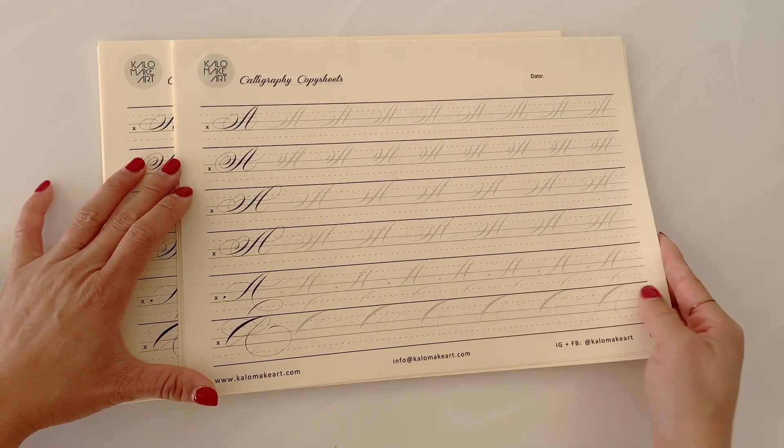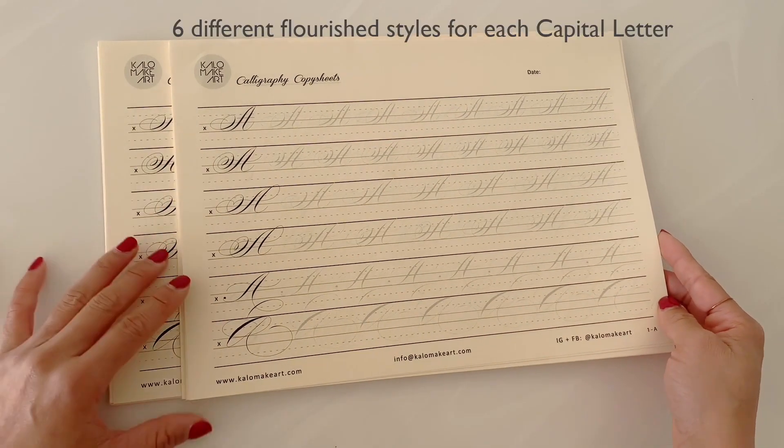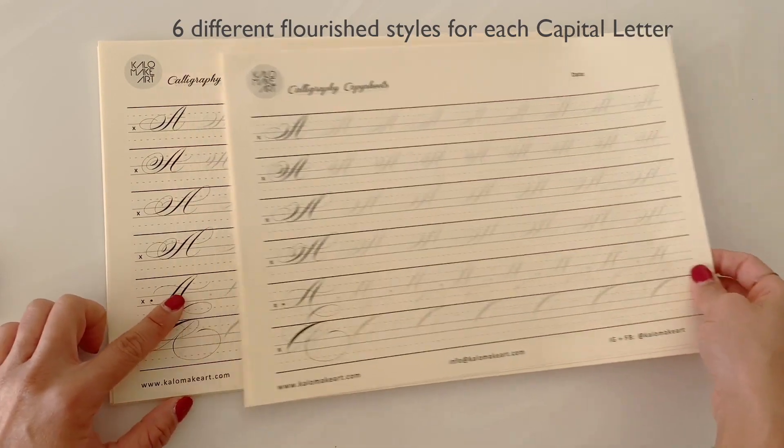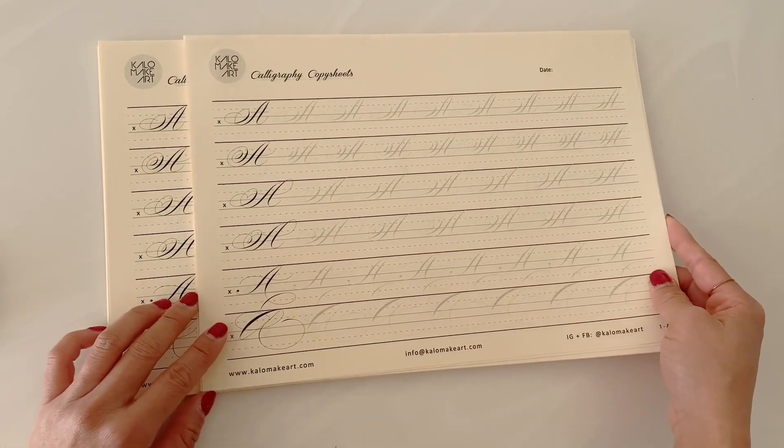Now as you can see, on my Calligraphy Copy Sheet, there are 6 different Flourish styles to write the same capital. Now in this video, you will only see how I write one of them.